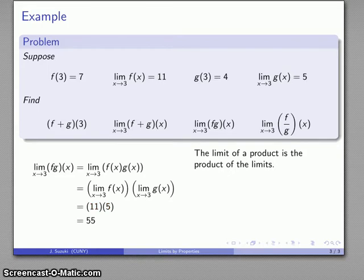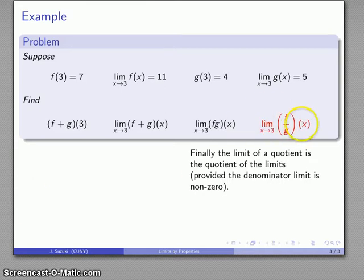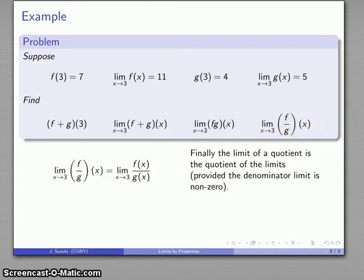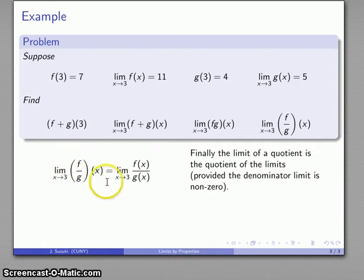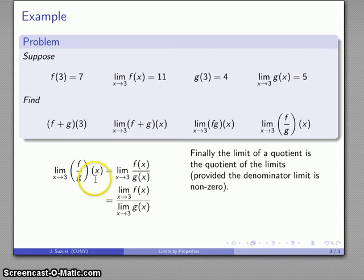Now we'll find the limit of the quotient of two functions. The limit as x approaches 3 of f over g of x is just notation for the limit of f of x over g of x. The limit of a quotient of two functions is the same as the quotient of the limits. I know this limit is 11 and this limit is 5, so the limit is 11 fifths.